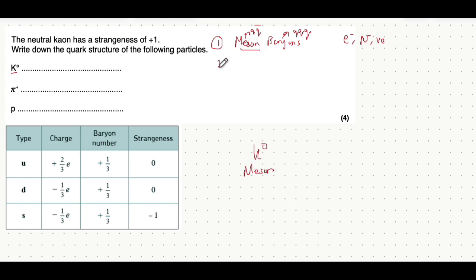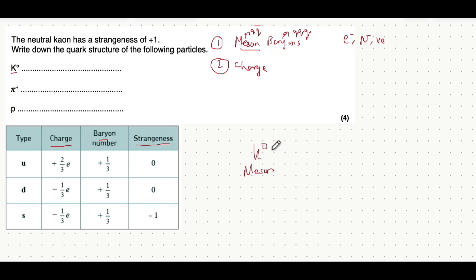Step number two: you want to ask yourself three different questions — what's the charge, what's the baryon number, and what's the strangeness of the particle? The charge of a K-naught meson: it specifically tells you it's a K-naught and not a K-minus or K-plus meson, meaning the charge is equal to zero.